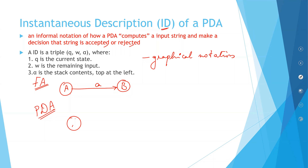Now let's see how you do the graphical description in a pushdown automata. It is almost the same — you will have a state called A, a new state called B, and a transition from A onto B. In finite automata you simply write your input string as a symbol, but in a PDA you use the instantaneous description.